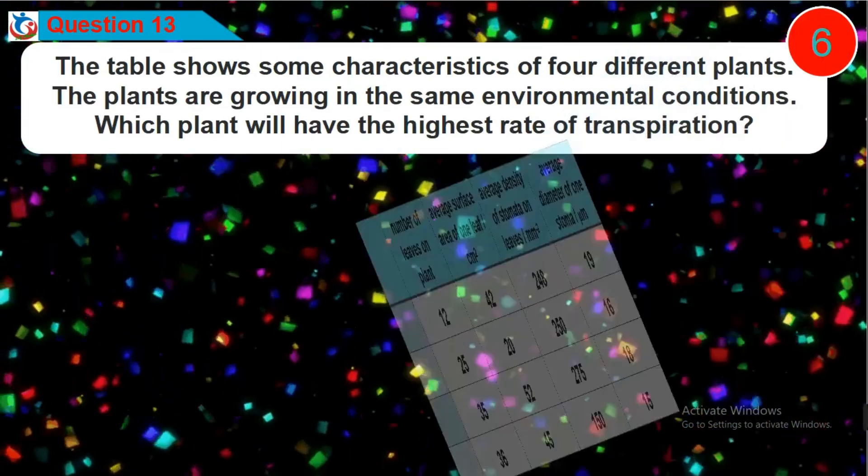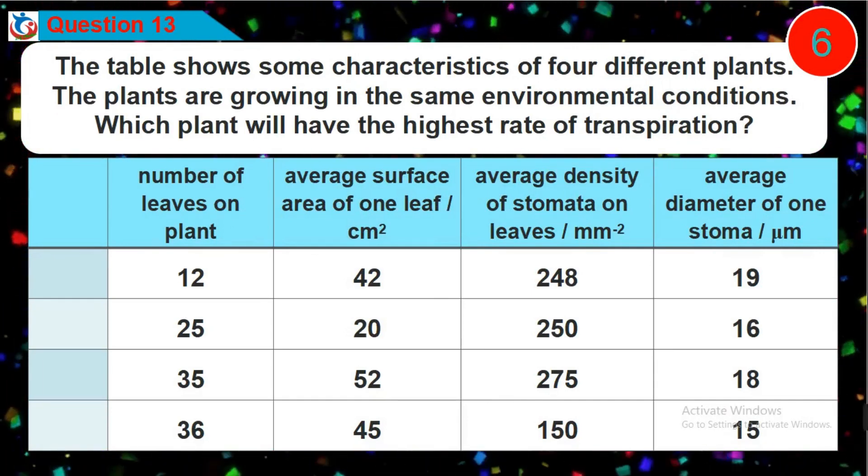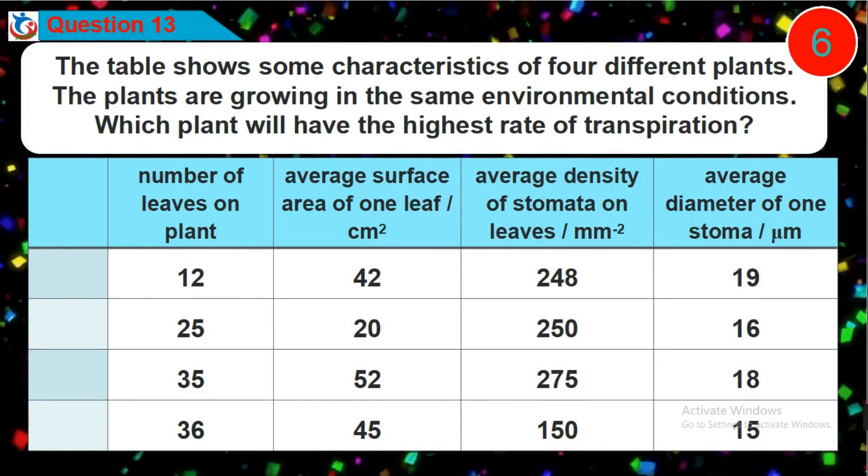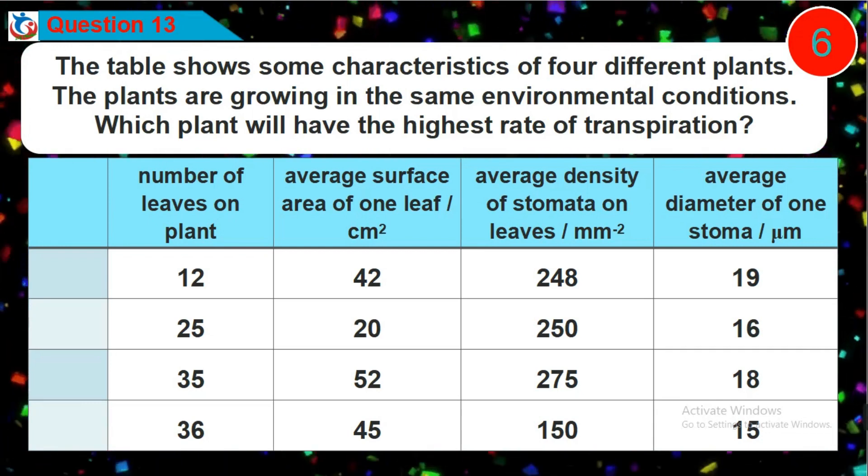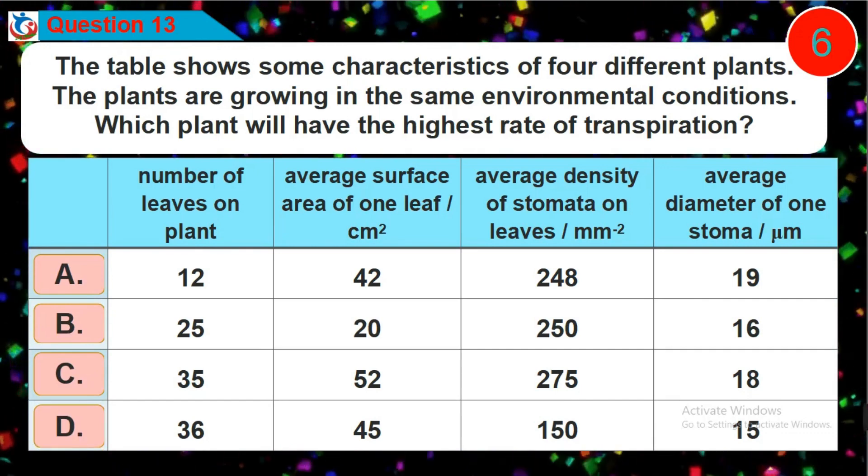Question 13. The table shows some characteristics of four different plants. The plants are growing in the same environmental conditions. Which plant will have the highest rate of transpiration? Is it option A, B, C or D?